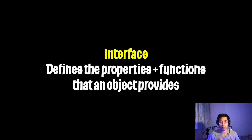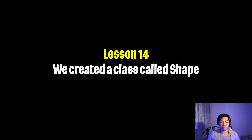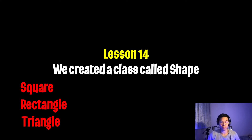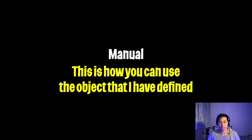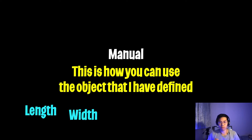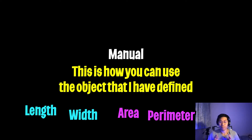An interface is basically a description of all the properties and functions that an object provides. For example, in the previous lessons we created a class called Shape, and we declared that all shapes have the properties length and width, and all shapes have functions to calculate the area and also the perimeter. One way you can think about an interface is that it's very similar to writing a manual, where you're just telling end users that if they create a shape object, they can grab the properties length and width, and they can also use the provided functions area and perimeter. If this doesn't make sense, don't worry — let me share a real life example.